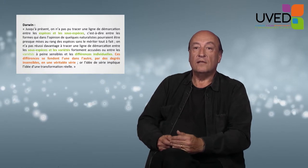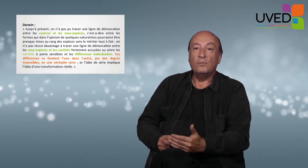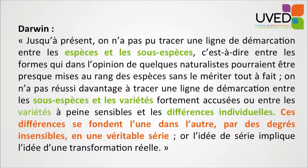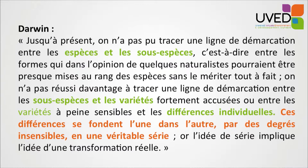Obviously this is an arbitrary process, and Darwin insists by saying that until now we've not been able to trace the demarcation between species and subspecies. Neither have we found a demonstration between subspecies and varieties or sensitive varieties and individual differences.